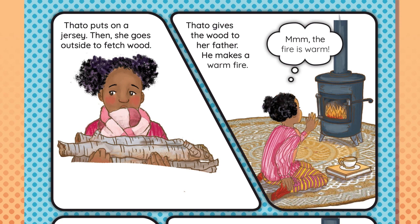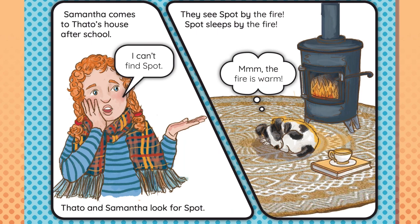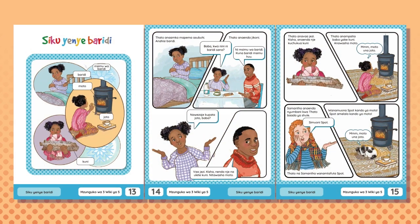Tado puts on a jersey. Then, she goes outside to fetch wood. Tado gives the wood to her father. He makes a warm fire. Hmm, the fire is warm. Samantha comes to Tado's house after school. I can't find Spot. Tado and Samantha look for Spot. They see Spot by the fire. Spot sleeps by the fire. Hmm, the fire is warm.